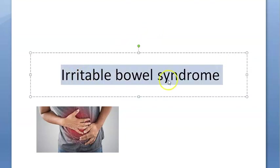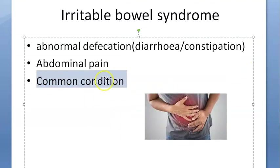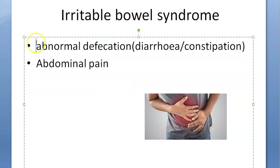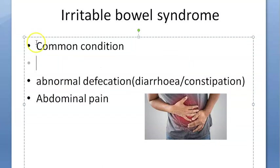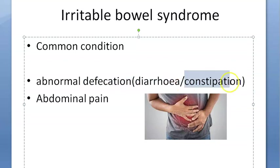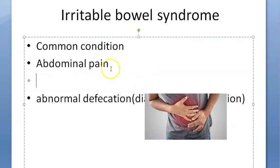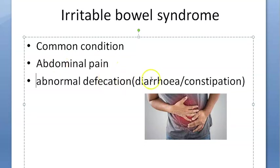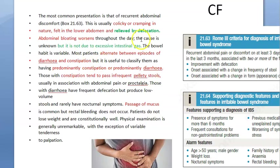Hello, in this video let us look at irritable bowel syndrome. This is a very common condition where people will have abnormal defecation — they can have either diarrhea or constipation or both. You classify it as predominantly diarrhea or predominantly constipation, and importantly, these people also have abdominal pain with the abnormal defecation.